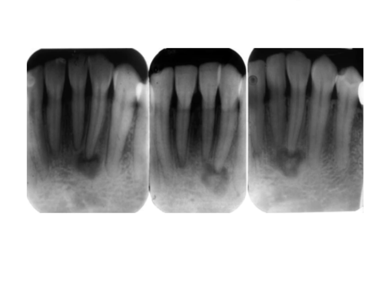Periapical cemental dysplasia is seen more frequently in women than men, typically between 20 and 40 years of age. Patients are absolutely asymptomatic — it is most often an incidental finding on a routine radiograph. In the initial phase it appears as a periapical radiolucent lesion, then a mixed radiolucent-radiopaque phase, and eventually it becomes completely radiopaque. These are the three phases. Once fully radiopaque, the mass grows and can lead to bony swelling in the anterior mandible.